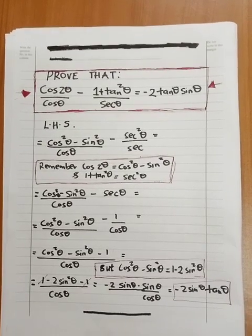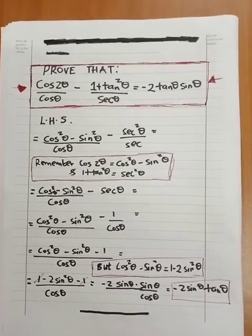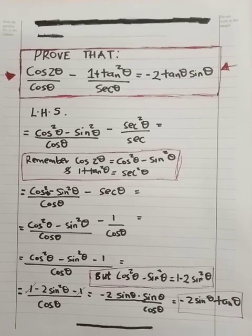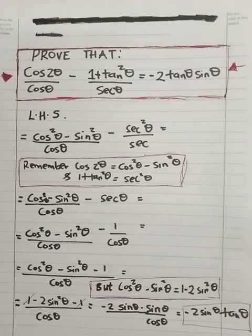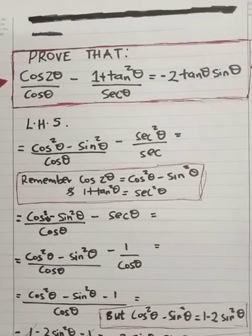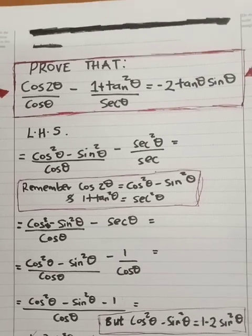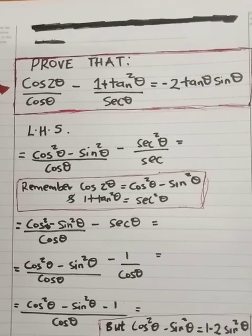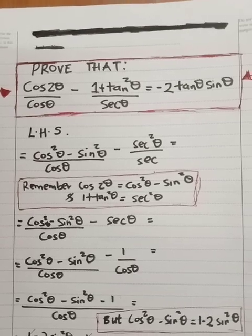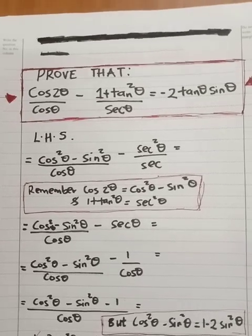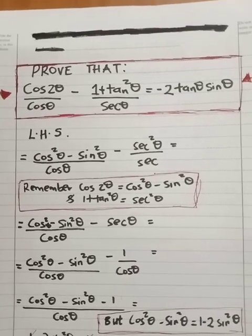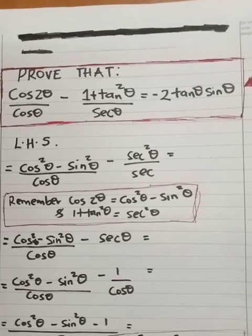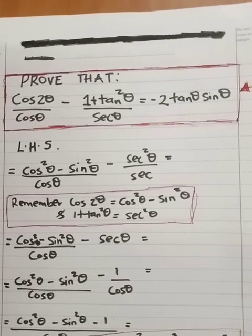Hello and welcome back to my YouTube channel. As I promised, I'm going to do this question. It is asking us to prove that cos(2θ) divided by cosθ, minus 1 plus tan²θ divided by secθ, is equal to negative 2 tanθ sinθ.